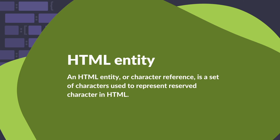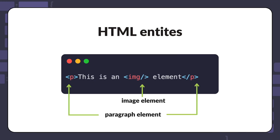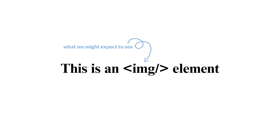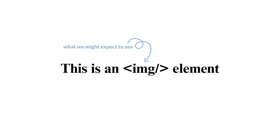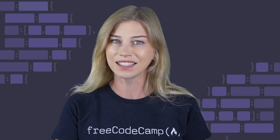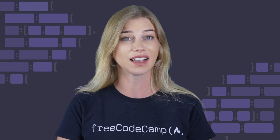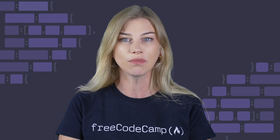In this example, there is a paragraph element with an image element nested inside. The text on the screen should say 'this is an image element,' where the word image is replaced with the syntax for an image element. However, the text currently says 'this is an element.' This is happening because when the HTML parser sees the less-than symbol followed by an HTML tag name, it interprets that as an HTML element.